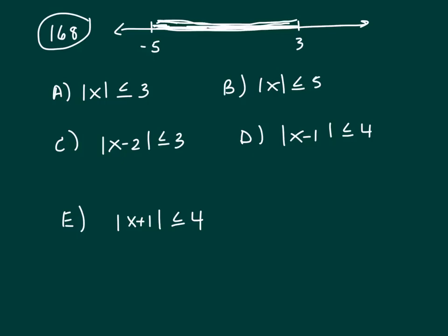Let's look at the first one: absolute value of x is less than or equal to 3. What number could you plug in here that would give a true statement? If you let x be 3, 3 is less than or equal to 3. 2 would work, 1 would work.